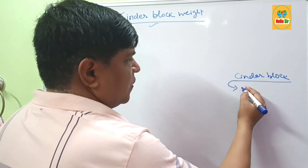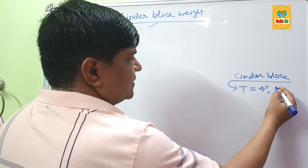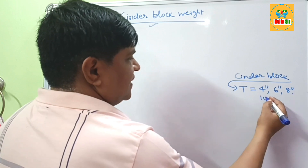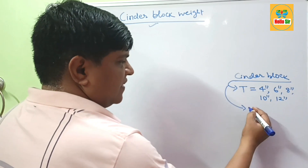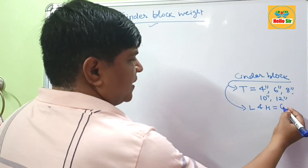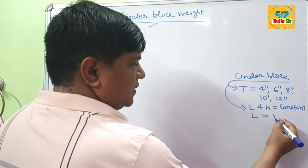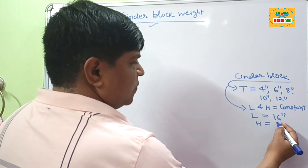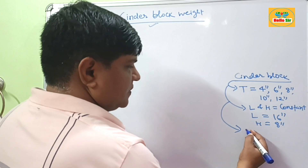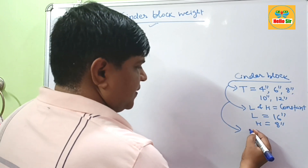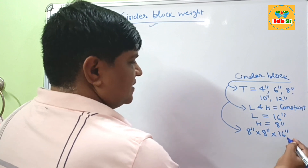The size of a cinder block is described by its thickness. It may be 4 inches thick, 6 inches thick, 8 inches thick, 10 inches thick, or 12 inches thick. The length and height remain constant and cannot be changed. The length of a cinder block is about 16 inches and the height is about 8 inches. So the standard cinder block dimension is 8 inches thick, 8 inches in height, and 16 inches in length.